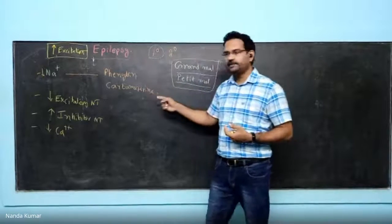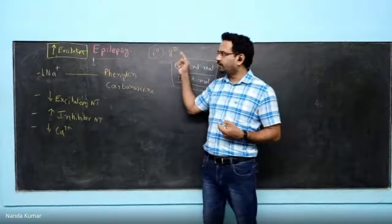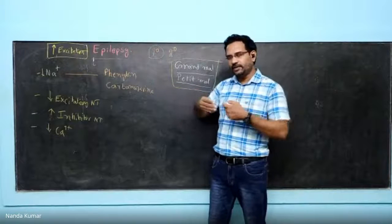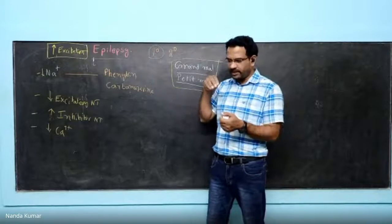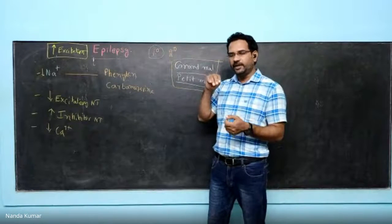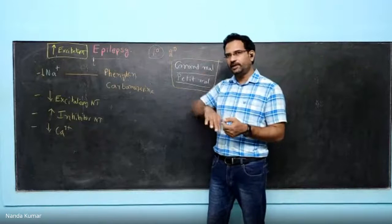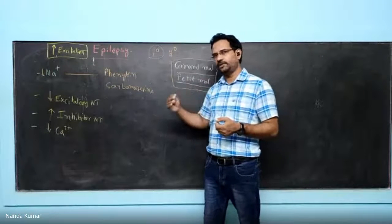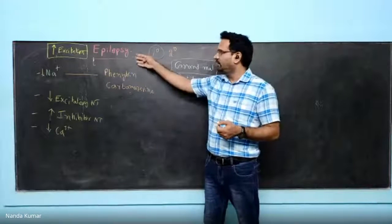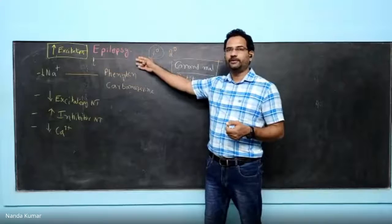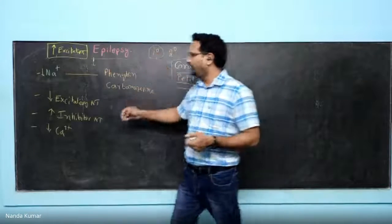Phenytoin and carbamazepine work by blocking sodium channels. When sodium channels are blocked, sodium entry is inhibited. If sodium entry is inhibited, depolarization does not occur, action potential is not generated, and neuronal firing will be blocked.